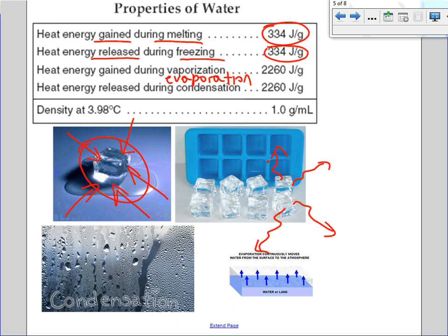Heat energy is released during condensation. Condensation is the gas phase to the liquid phase, so heat energy is being released and now you're forming water droplets. That also takes 2,260 joules per gram.